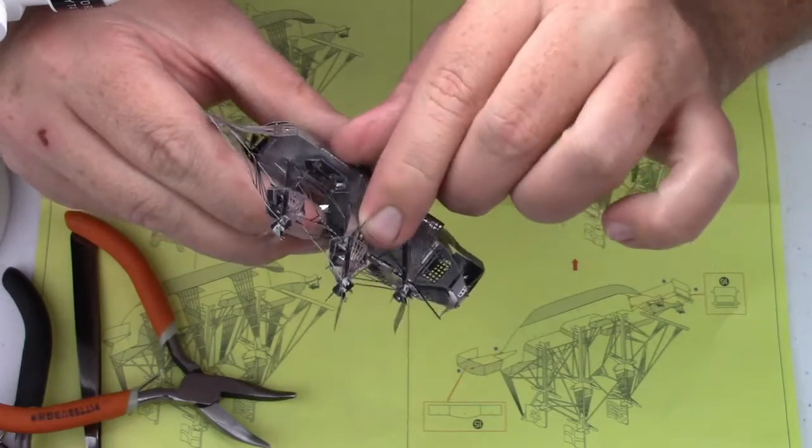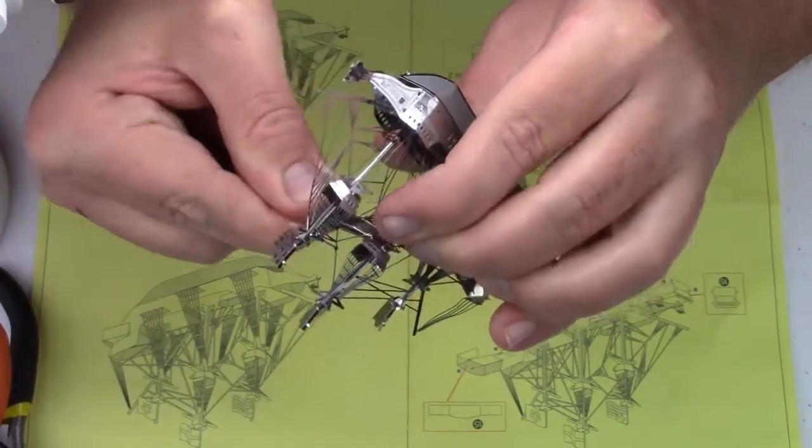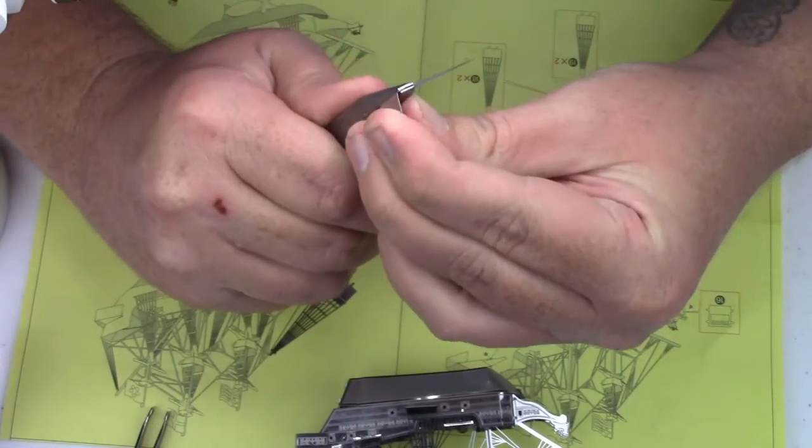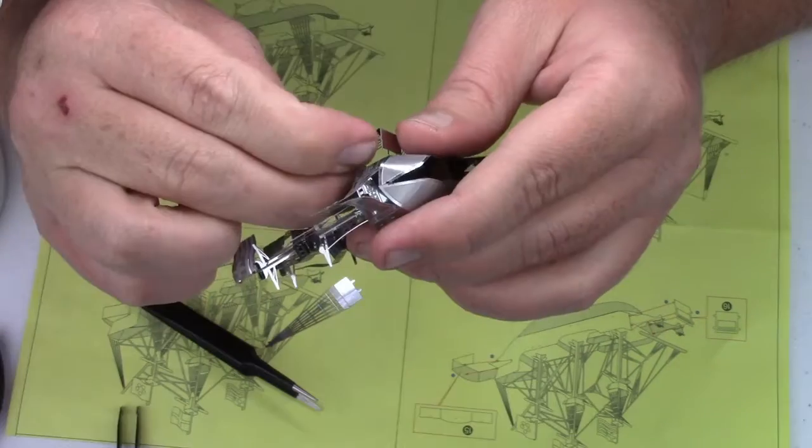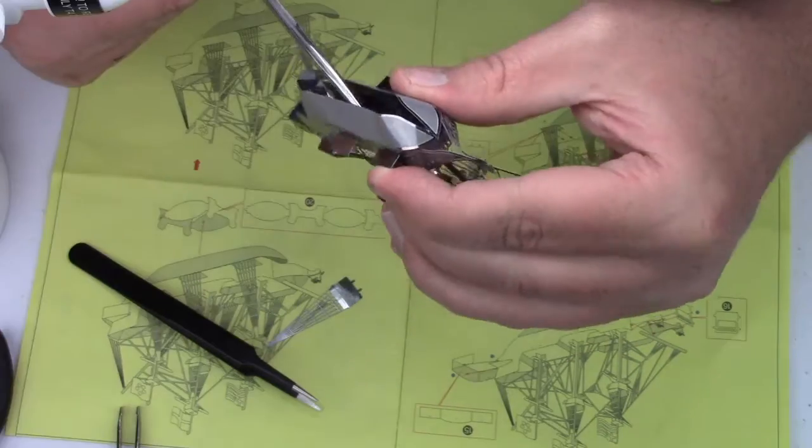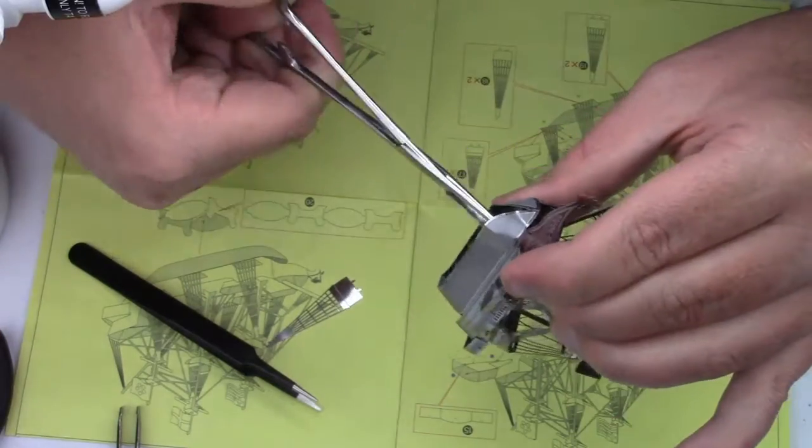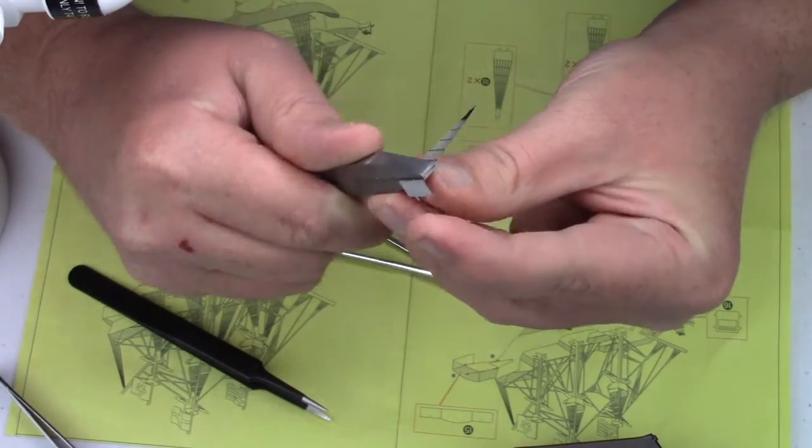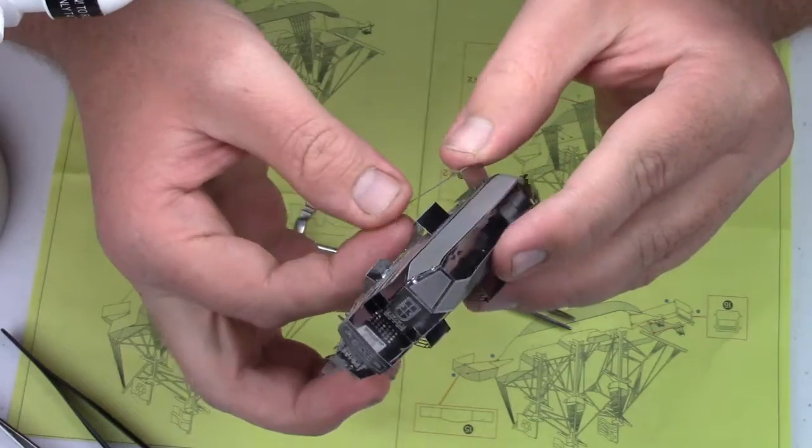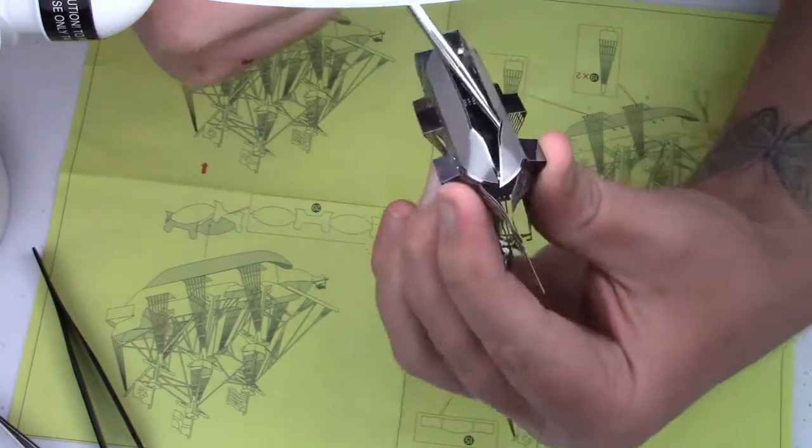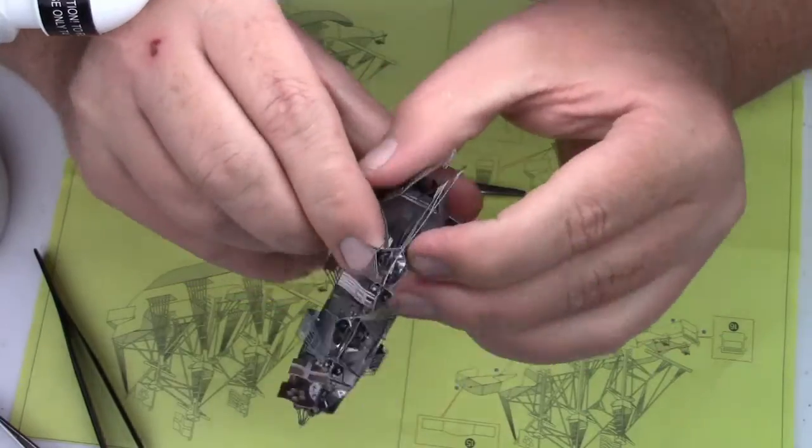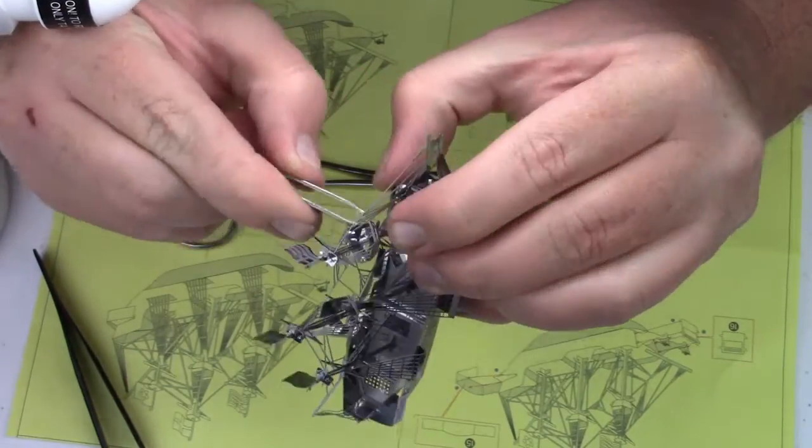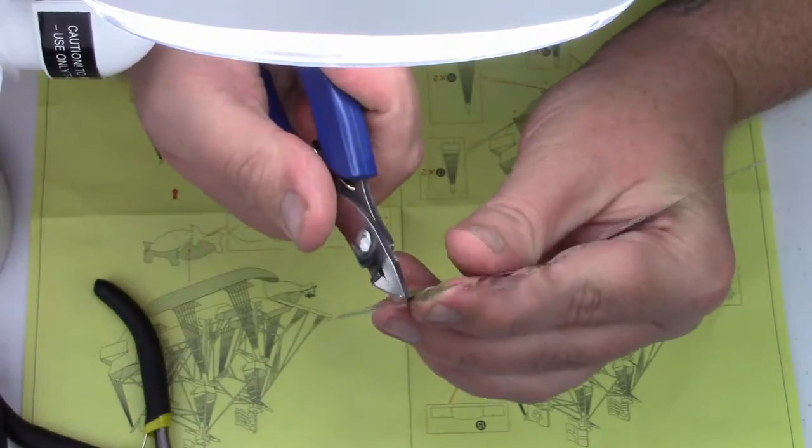This video has been edited down. I've not shown all the different attempts, adjustments, or retries of this build. I also clip out parts where I am studying directions, searching for and clipping parts, and sometimes repetitive steps. It may make this kit look like it comes together easier than it did, but there's a lot of bending and adjusting of parts to make things fit. Work slowly, be patient, and take your time.